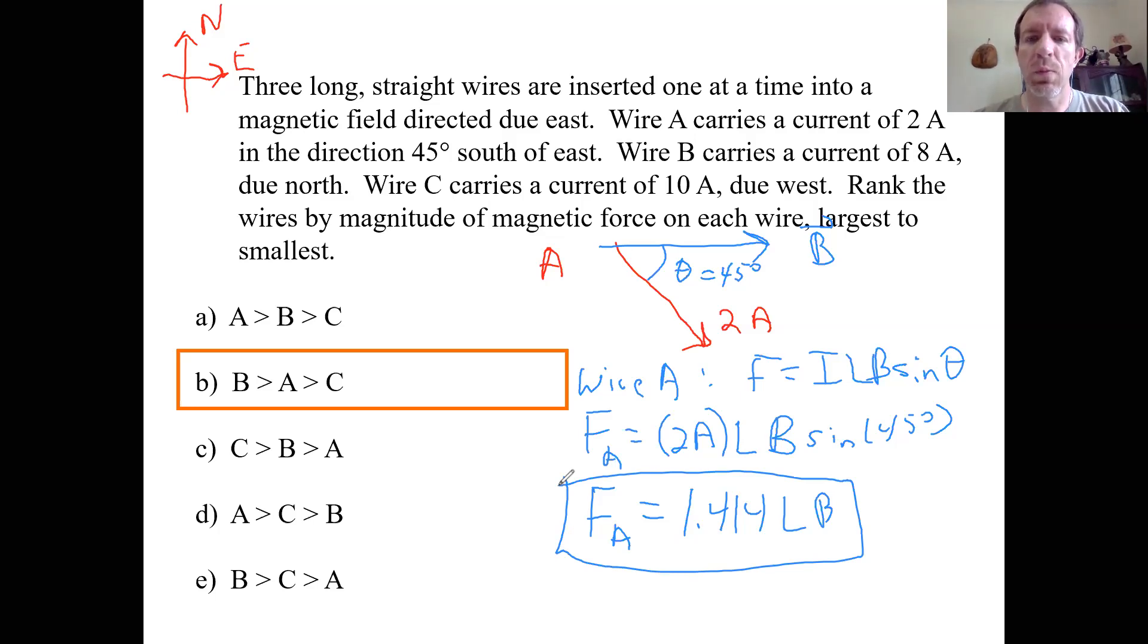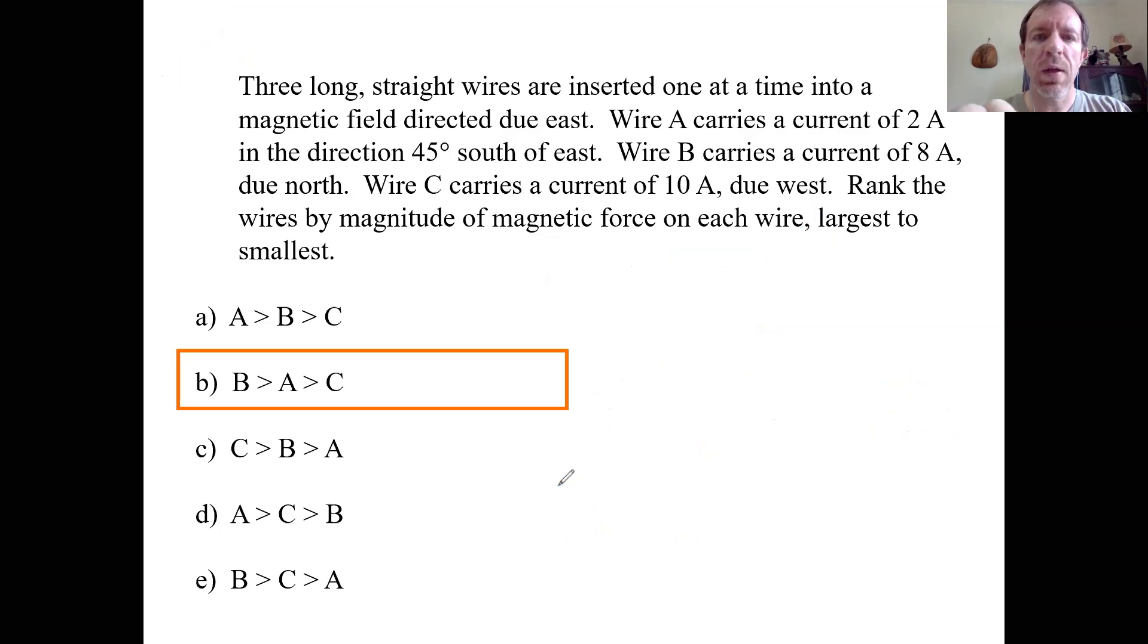Now we don't know what L or B is, but we can use this expression in order to be able to compare it to the force on the other two wires. So let's hold that in our mind, 1.414. And let's move on. Okay. So the next one says, well, what are we doing now? We're looking at wire B. It says wire B carries a current of eight amps due north. Okay. So here's B. We're doing B. Eight amps due north. And then it's still in that same magnetic field there.